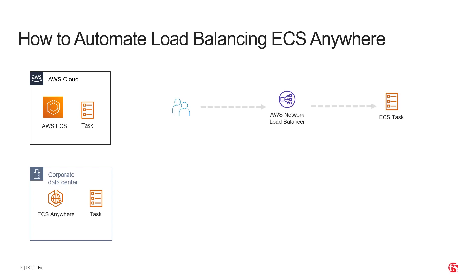When you're deploying in AWS, you'll typically make use of an AWS network load balancer to expose your network services. In today's video, we'll be talking about how we can use a Big IP to provide network services for your ECS Anywhere tasks.